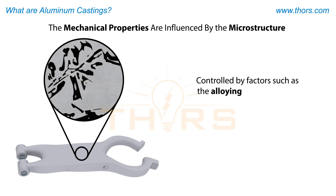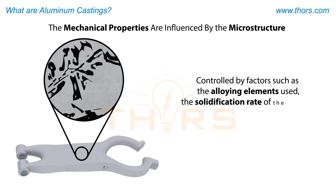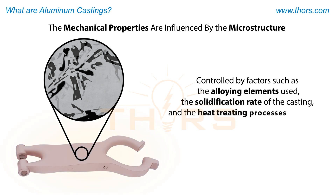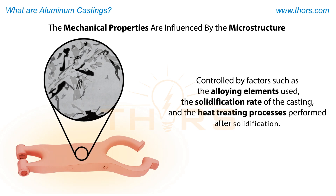The mechanical properties of aluminum alloys are directly influenced by the microstructure of the metal, which is controlled by factors such as the alloying elements used, the solidification rate of the casting, and the heat treating process performed after solidification.